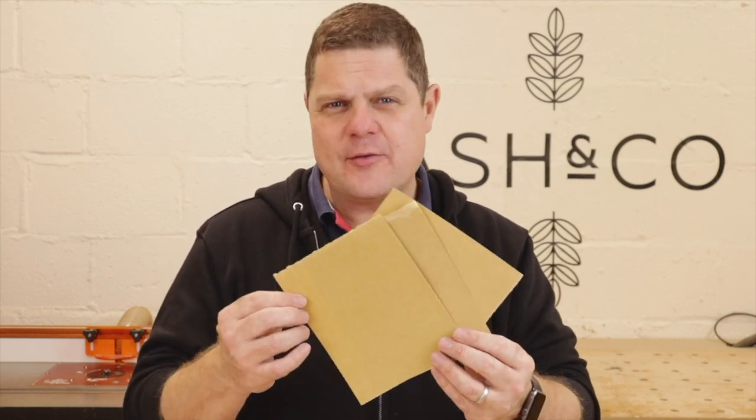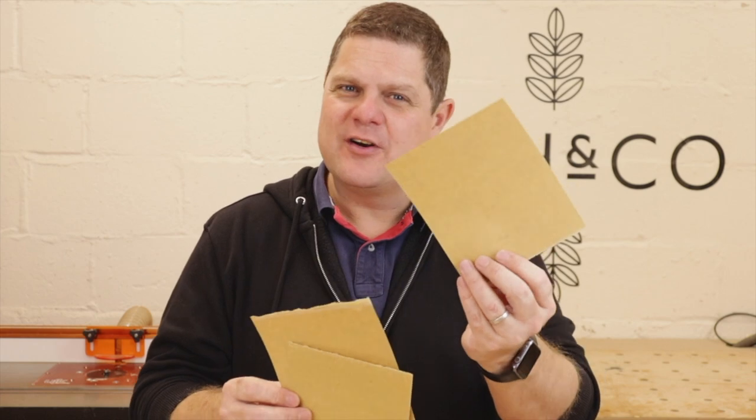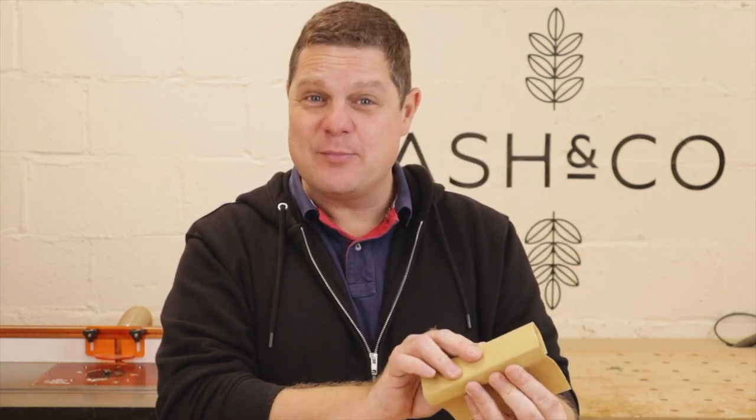Next up, we've got sandpaper, and this is for smoothing all the edges of your wood. Now, you've got three different types of sandpaper in here. You've got rough, medium, and very fine. Now, all you need to do is tear a piece off or fold it and start rubbing your blocks. If you want to, you can wrap it around another piece of wood to create a sanding block as well, something like this. Sandpaper is very easy to use, and all you do is start rough, then go to medium, then go to fine. And you can do it as much or as little as you like.